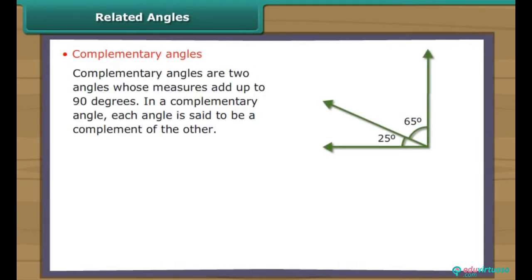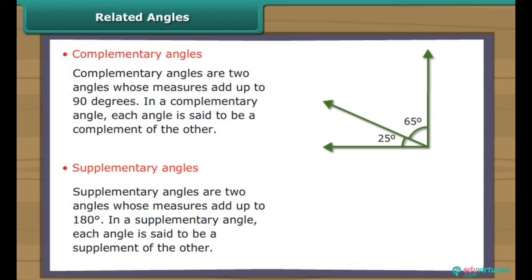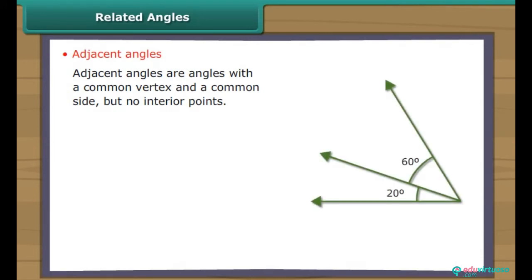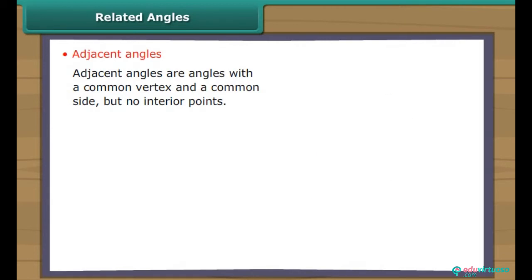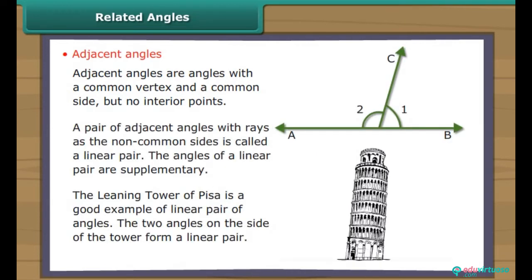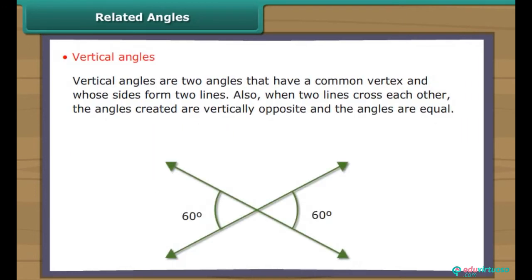Complementary angles are two angles whose measures add up to 90 degrees. Supplementary angles are two angles whose measures add up to 180 degrees. Adjacent angles are angles with a common vertex and a common side but no interior points. A pair of adjacent angles with rays as the non-common sides is called a linear pair. Vertical angles are two angles that have a common vertex and whose sides form two lines.